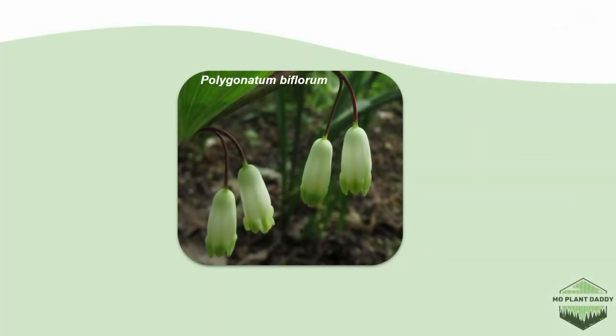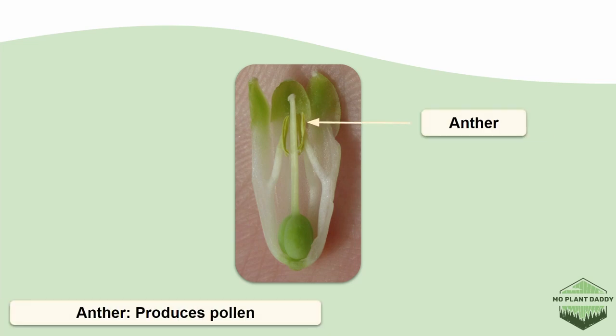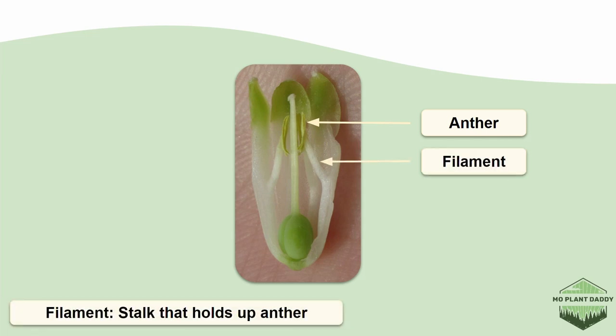Now we're going to use the bell-shaped flower of Solomon's seal to get a closer look at the reproductive organs of a flower. If we cut one of these flowers open we'll get a clear view of those organs. Here we have a big yellow anther, which is where pollen is produced, and we have a thin white filament which holds up the anther.